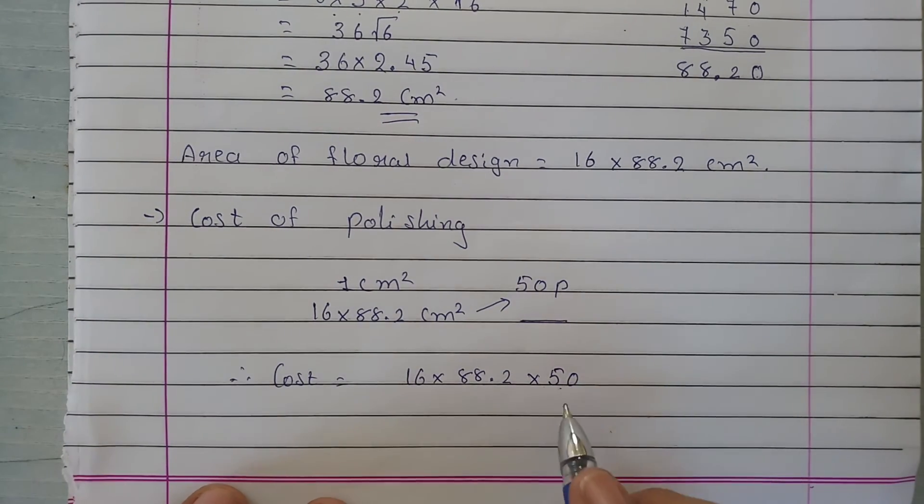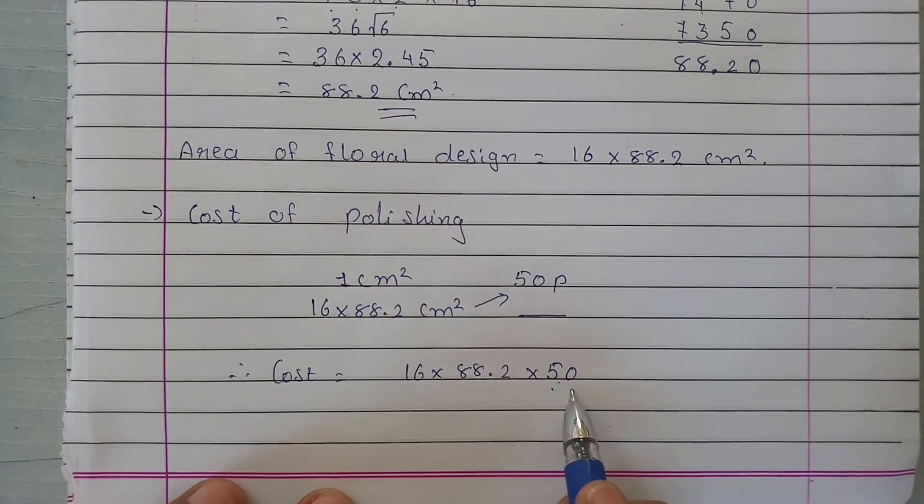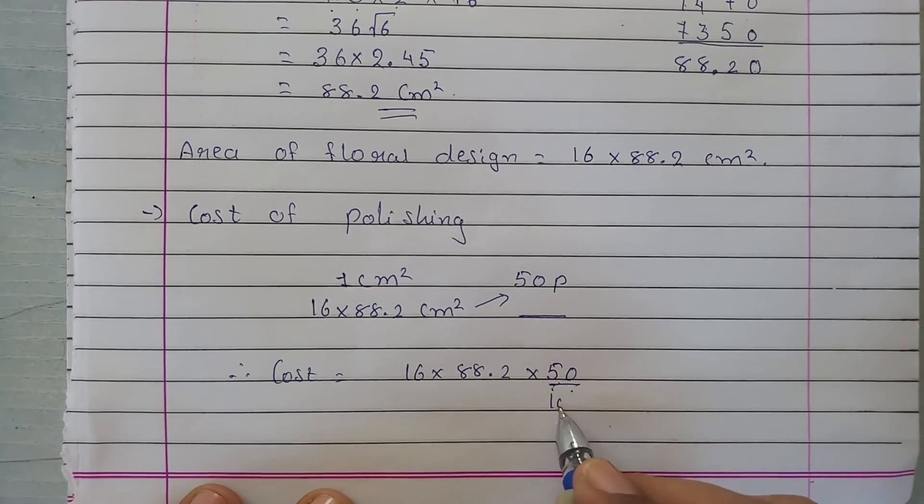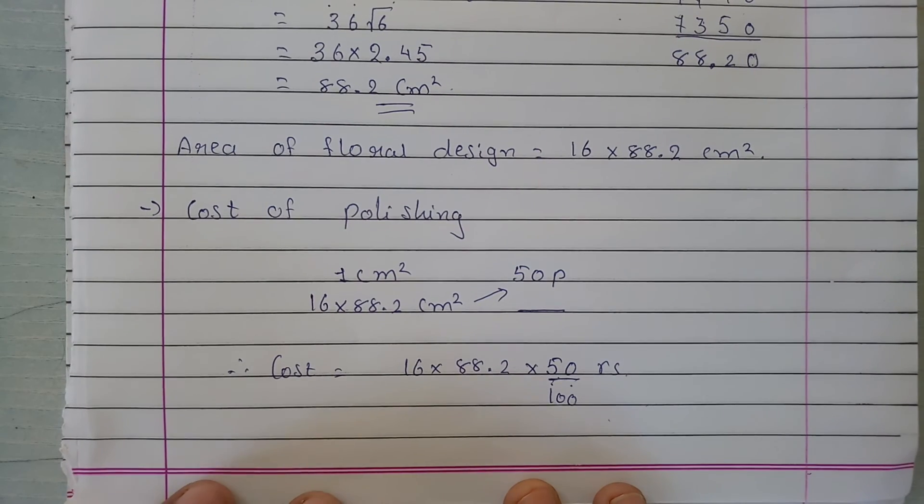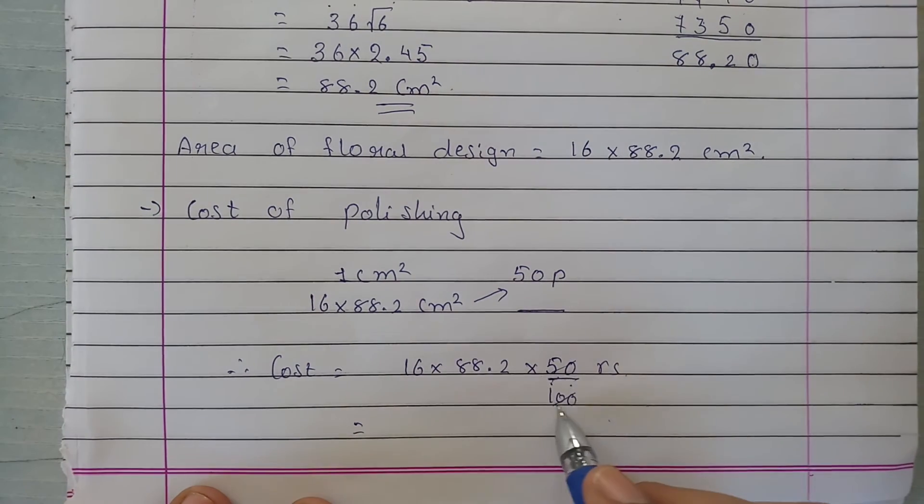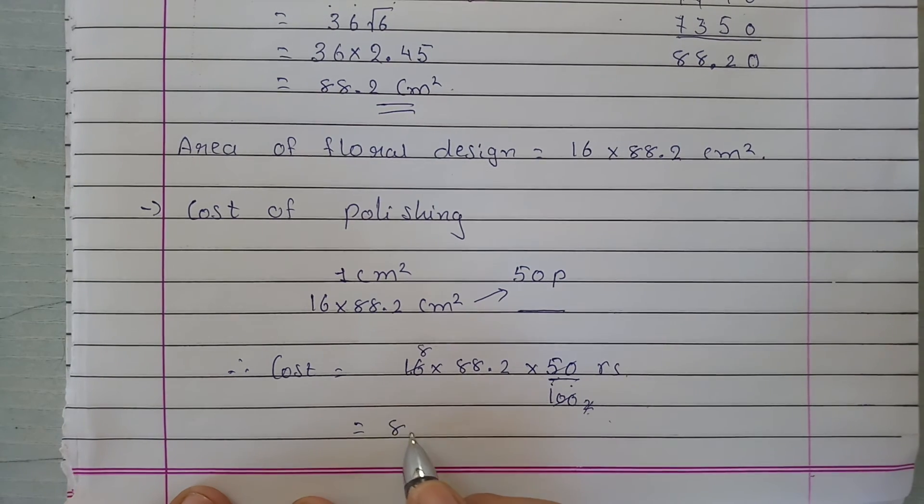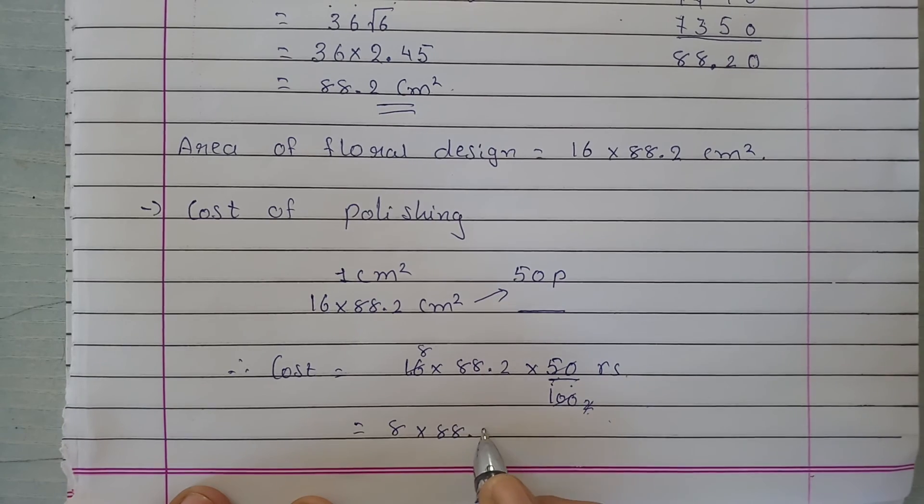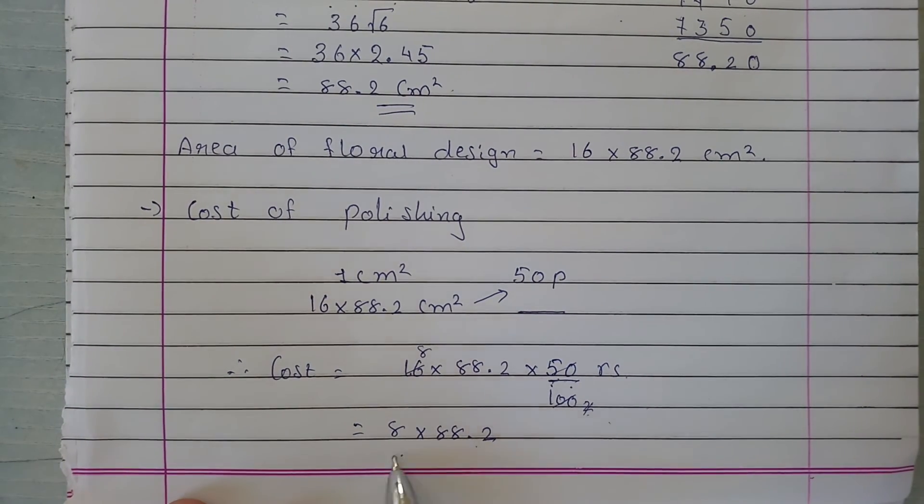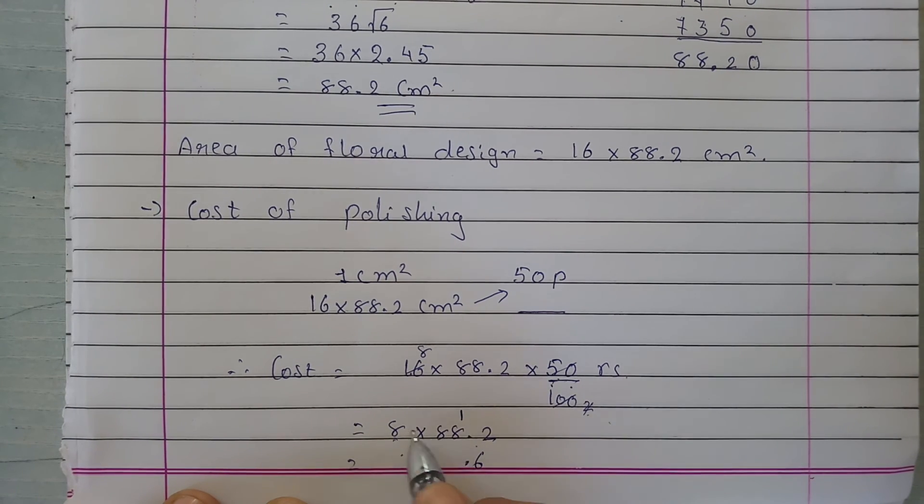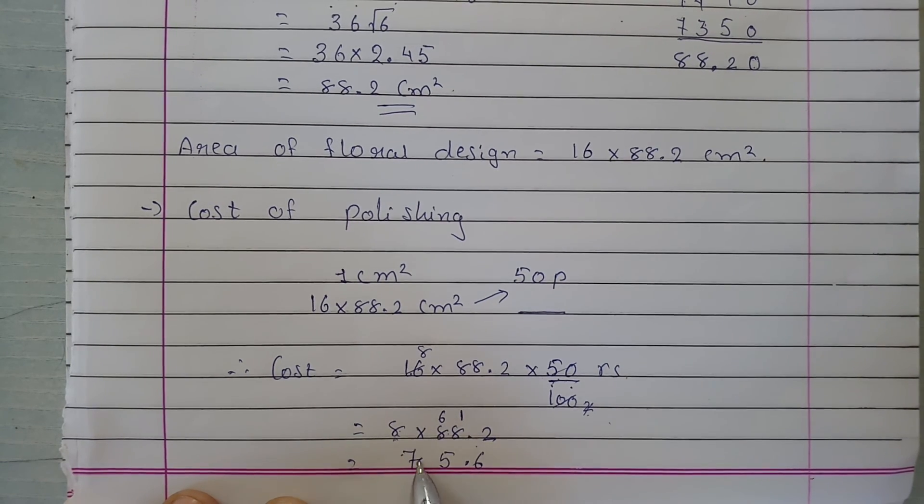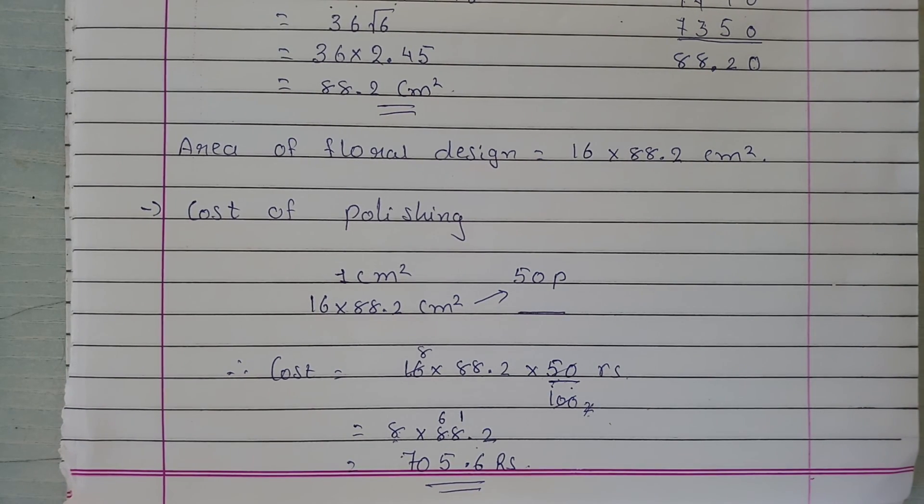This 50 is in paisa, so we convert it to rupees by dividing by 100, giving 50 upon 100 rupees. Simplifying: 50 divided by 2 is 25, 100 divided by 2 is 50, 16 divided by 2 is 8. So we have 8 times 88.2. Multiplying: 8 times 2 is 16, 8 times 8 is 64 plus 1 is 65, 8 times 8 is 64 plus 6 is 70. So our cost is 705.6 rupees.